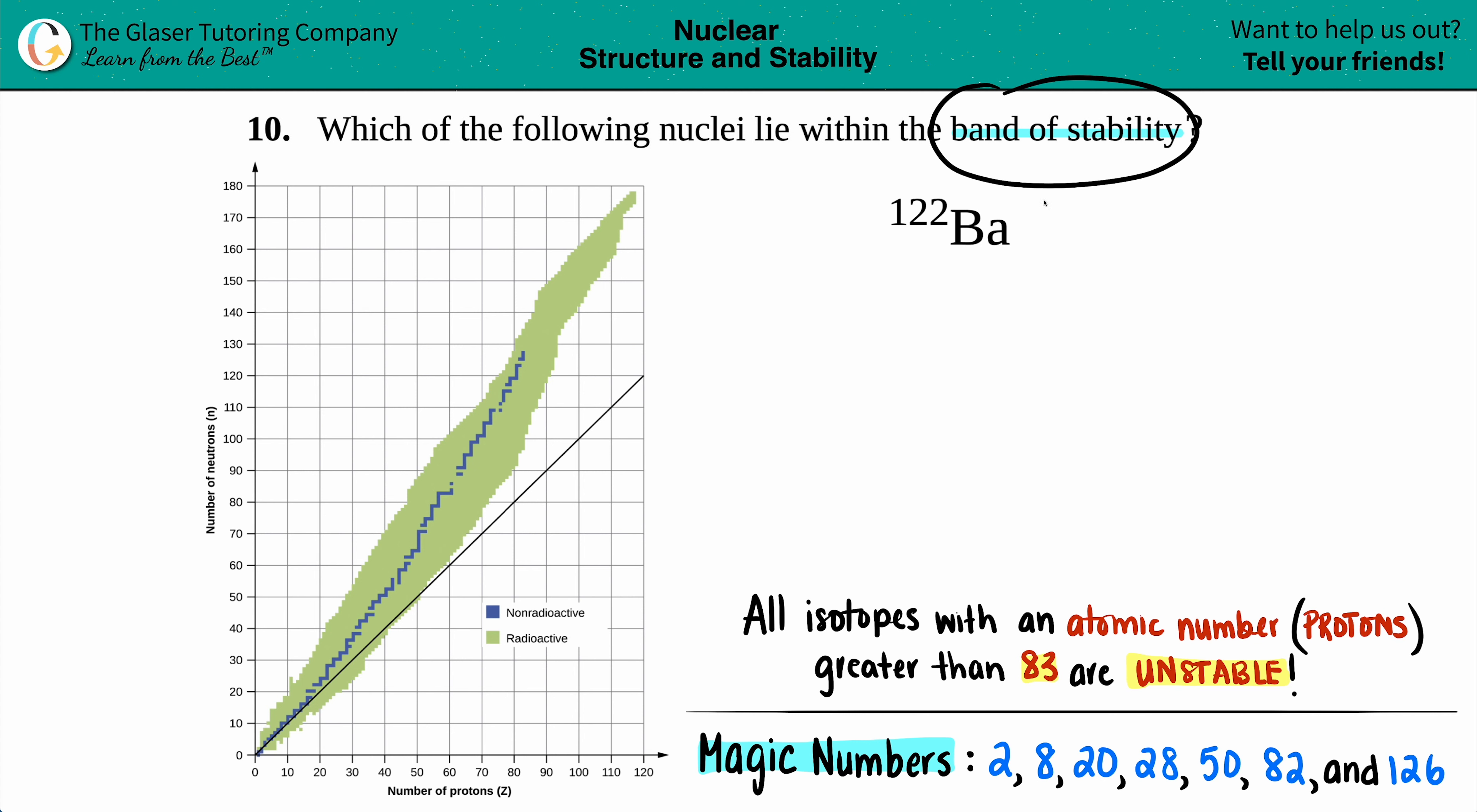If you're within the band of stability, that just means that your isotope, the given isotope, is a stable isotope. But if it's not in the band of stability, it's unstable and it's going to be radioactive.